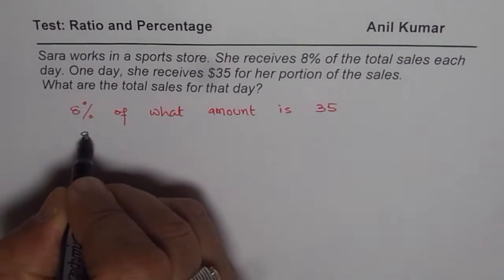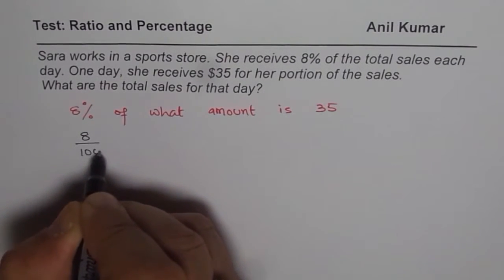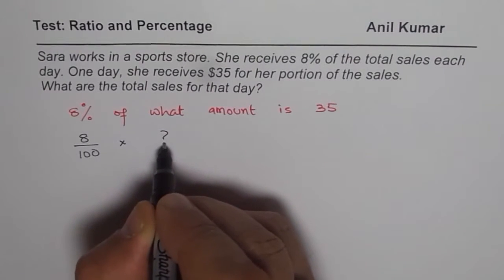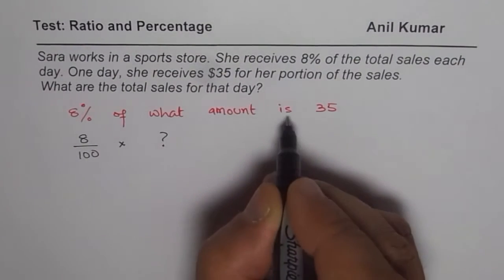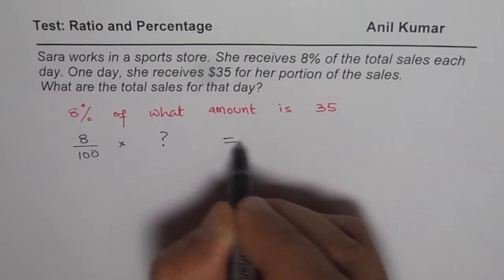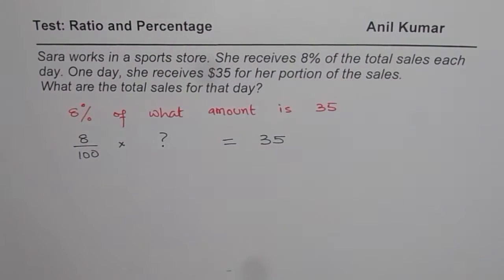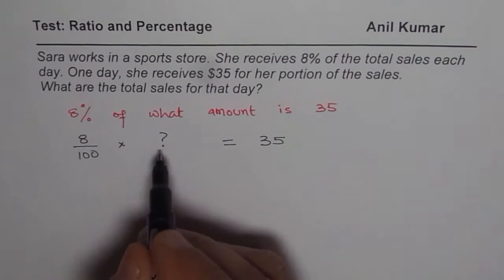So 8% means 8 out of 100. Of means multiplication. What you don't know, so we put a question mark. Amount is equal to $35. That is how you can get your equation.